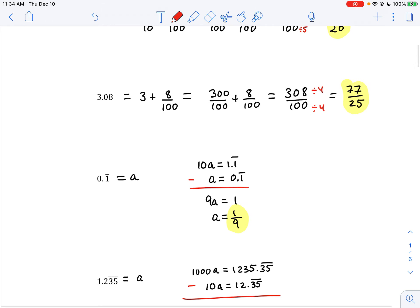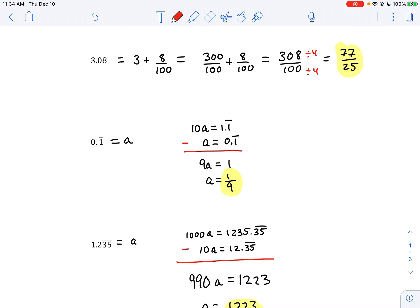A lot of people on this one here, 0.1 repeating, just simply went straight to 1 ninth as an answer, as if somehow that was some sort of given. But then they proved that 1 ninth, when you divide it, you do get 0.1 repeating. But how do you get 1 ninth in the first place? That was the question.